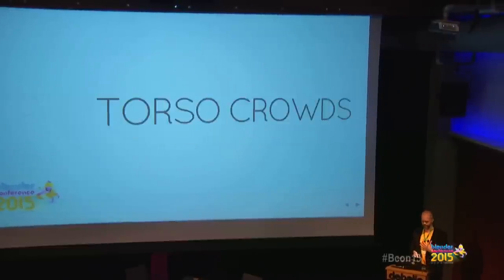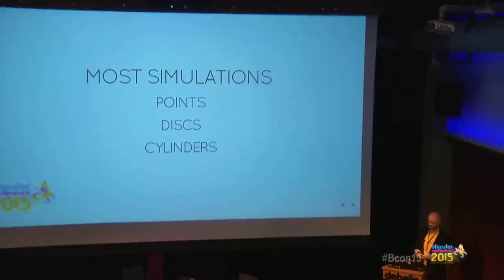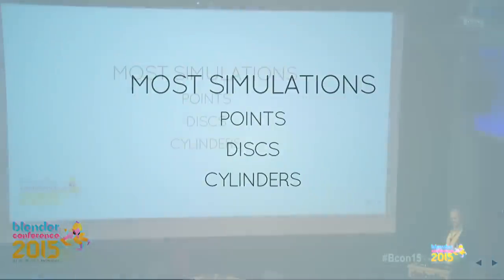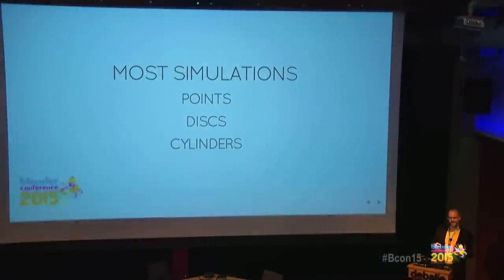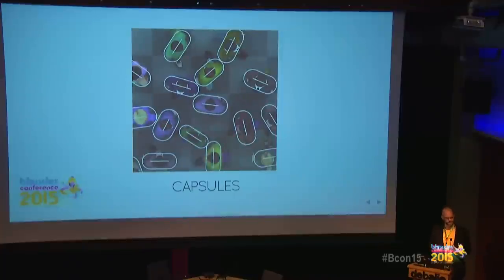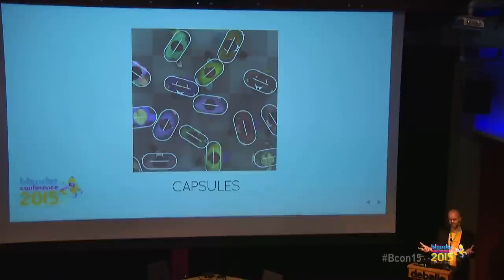Most simulations use a point, disk, or cylinder shape for characters. But our torsos are not cylindrical. We wanted to model things like squeezing through a gap — rotating your torso to get through. With a cylinder, it doesn't matter which way you rotate it, so you can't use orientation to plan. That is why we use capsule shapes: where a disk is a point with a radius, we extended that point to a line segment also with a radius. Mathematically still quite simple, but now we can move sideways and rotate.